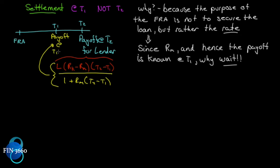To get the payoff at t1, we first calculate the payoff at t2, then discount it back one period at rm. At t1 we know rm, we know rk (the contract rate), we know t2 and t1 from the forward rate agreement. Since we know all the variables, we can already calculate the payoff at t2 and just discount it backwards to t1.